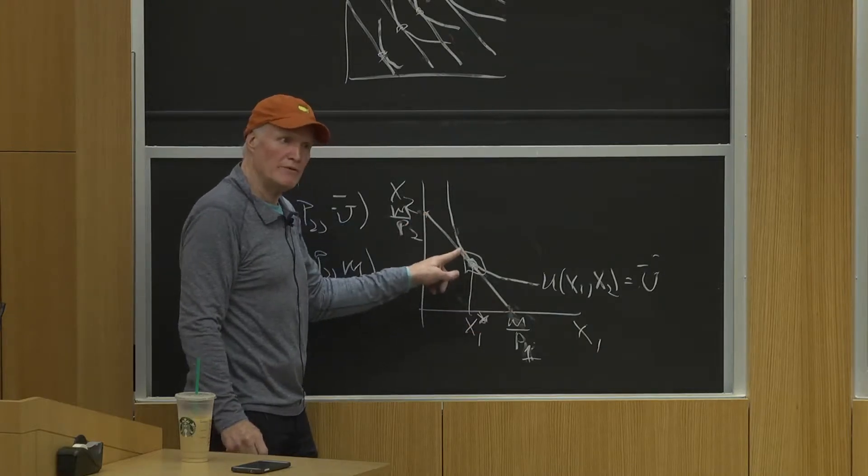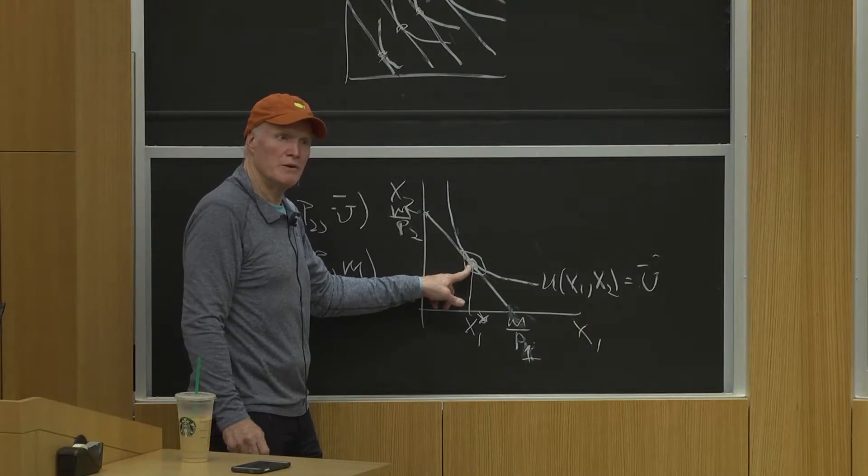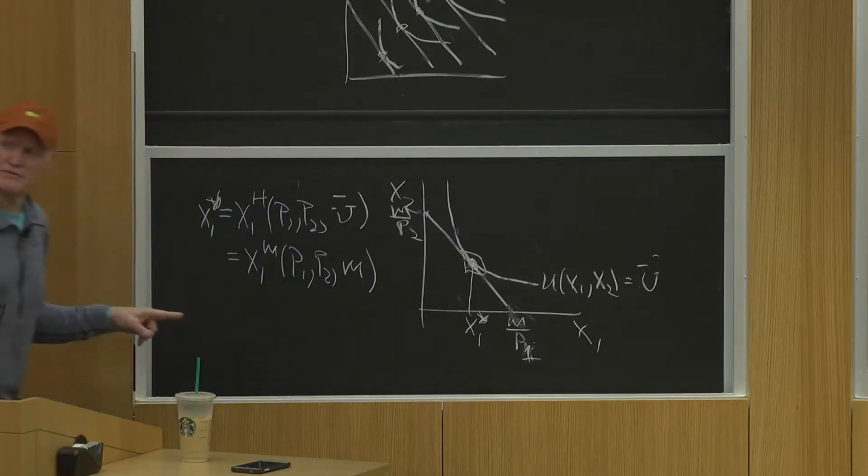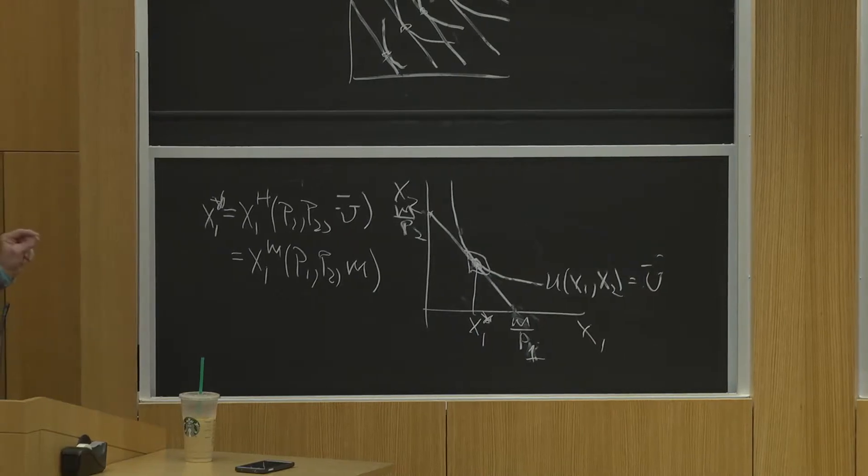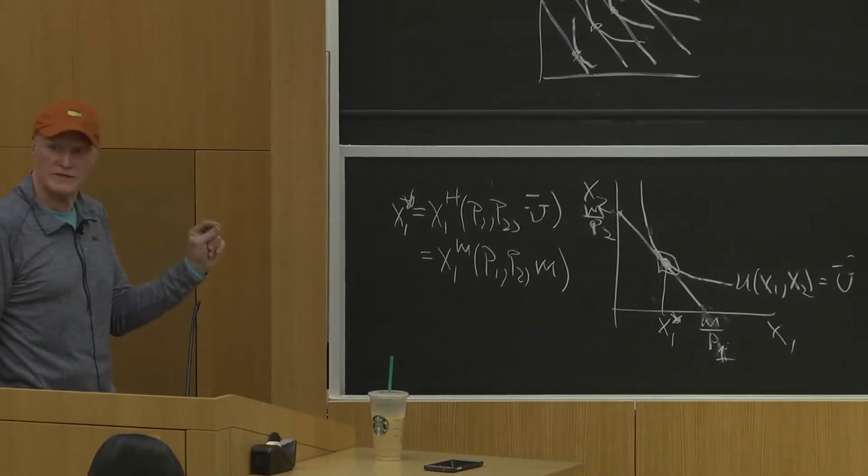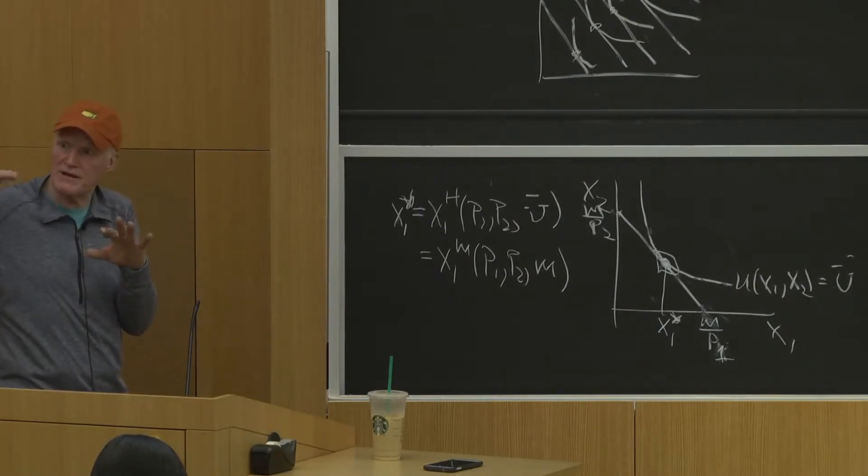It's the same point described from two different points of view. That's the difference between the Hicksian and the Marshallian demand systems. It's not a different set of choices. It's the same set of choices described from a different perspective.